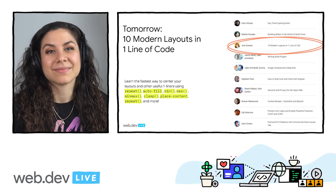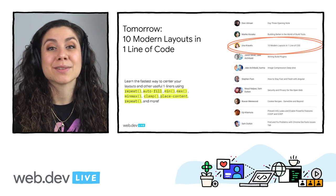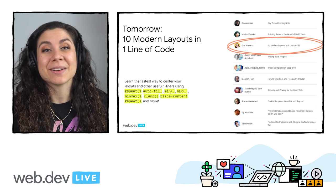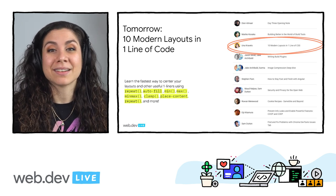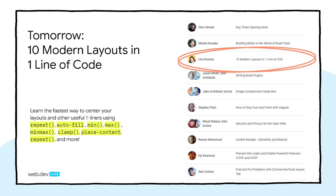CSS has been evolving so rapidly in the past few years and really months. Tomorrow I'll be going over a ton of cool aspects of modern layout with CSS Grid and Flexbox, including how to harness the power of CSS functions like clamp, fractional units, auto-placement, the min-max function, justification, place items, the repeat function, and a lot more to create robust layouts — breaking down how powerful a single line of CSS can be.